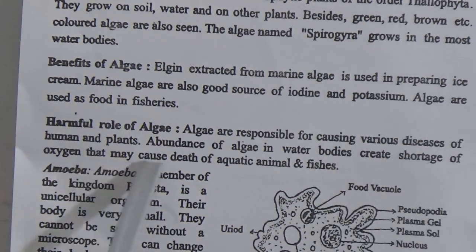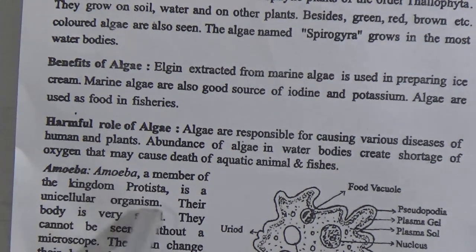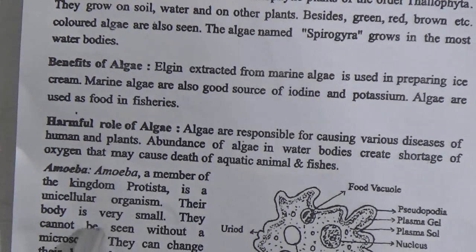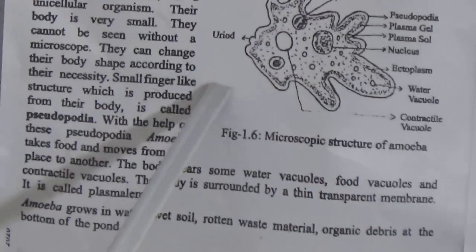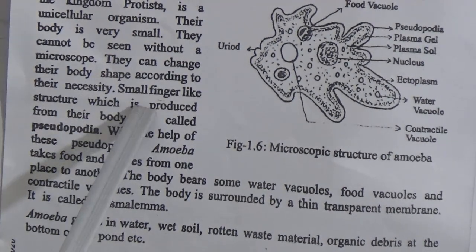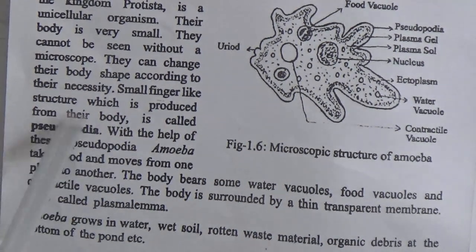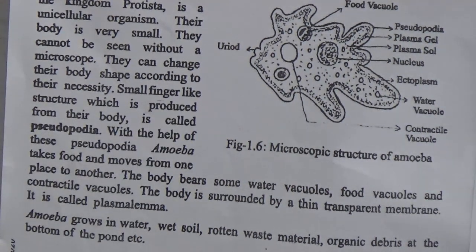Harmful role of algae: algae are responsible for causing various diseases of humans and plants. Abundance of algae in water bodies creates a shortage of oxygen and may cause the death of aquatic animals and fishes. Amoeba, a member of the kingdom Protista, is a unicellular organism. Their body is very small and cannot be seen without a microscope. They can change their body shape according to necessity.